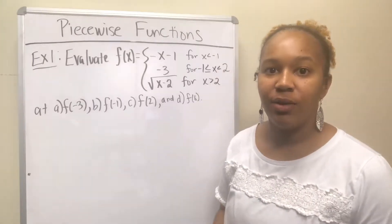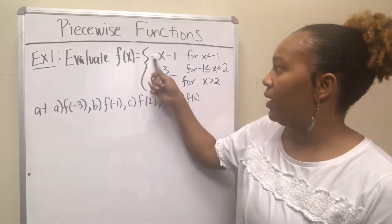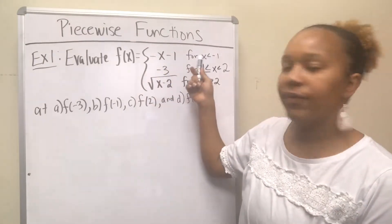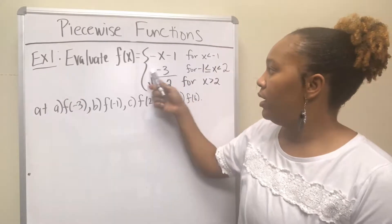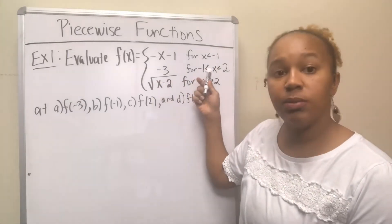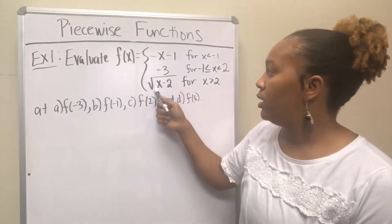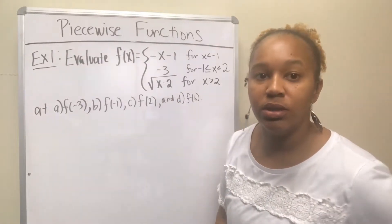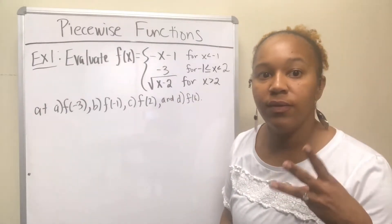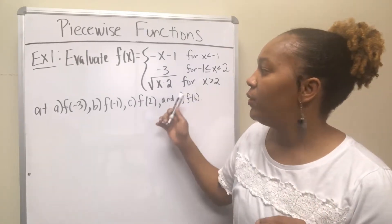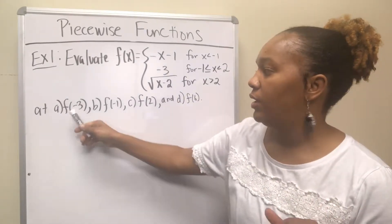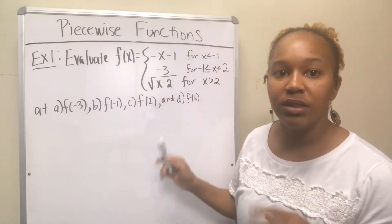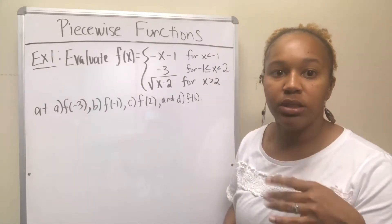For example one, we want to evaluate this piecewise function defined by f(x) equal to negative x minus 1 for x less than negative 1, f(x) equal to negative 3 for x between negative 1 and 2, and f(x) equal to the square root of x minus 2 for x greater than 2. This is a piecewise function defined in three different pieces, and we want to evaluate it at f(-3), f(-1), f(2), and f(6).